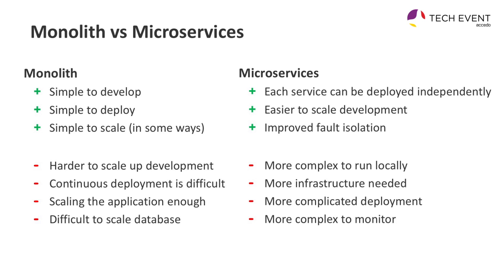But for microservices, it's definitely more complex to run them. To start your app locally, you might need to start four or five different services just to have normal functionality. You need more infrastructure — some kind of service discovery, load balancing, auto-scaling, and so on. It's more complicated to deploy: if you have five services, you have to start them in the correct order and they need to contact each other. And it's more complex to monitor — instead of one log file, you have to track a lot more network traffic, more logs, and services disconnecting from each other.